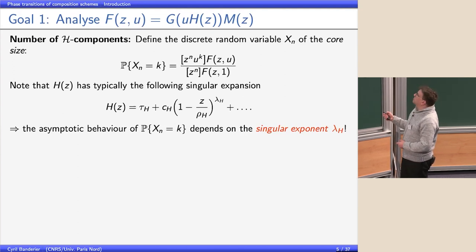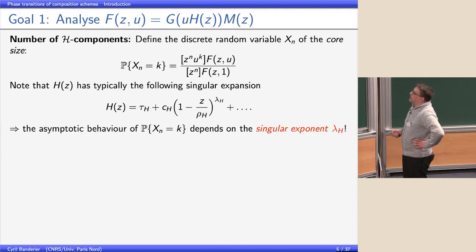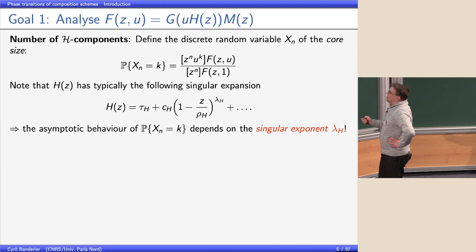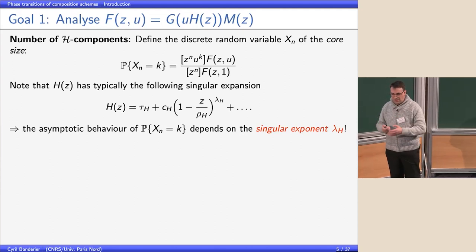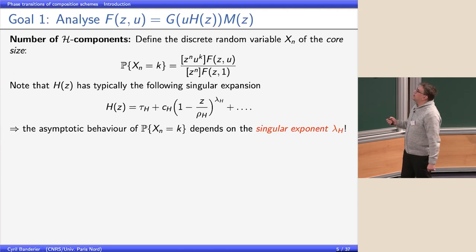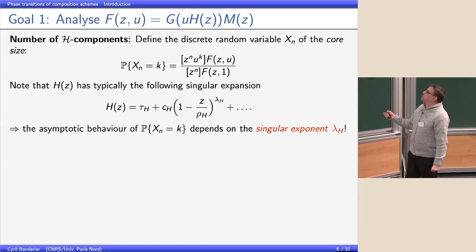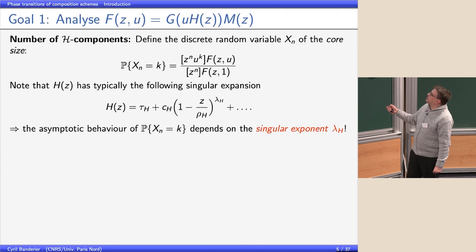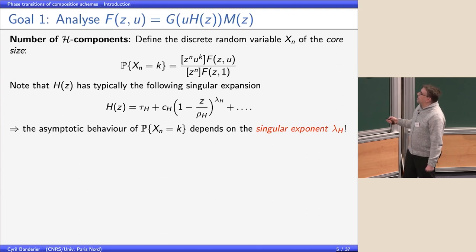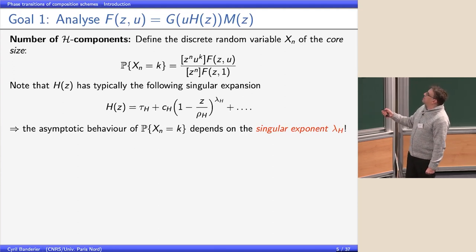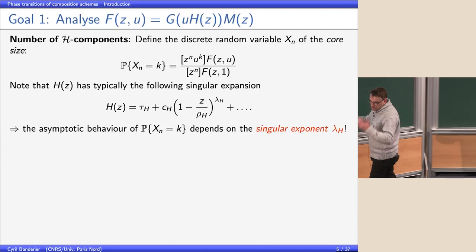We want to follow this distribution. In many cases the generating function of H will behave at its radius of convergence like a Puiseux series expansion — for example, it could behave like a square root, giving a cage lambda_H equal to one half. The asymptotic behavior of this probability depends strongly on this singular exponent, sometimes also called the critical exponent.